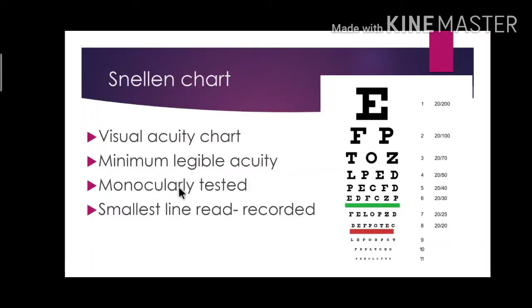Visual acuity is tested monocularly — that is, by covering one eye — and the patient is asked to read the letters from top to bottom. Whichever small line they are reading, that line is recorded as the eye's visual acuity. So if the patient is reading the 6/9 line, 6/9 is recorded. If they are able to read only till the 6/24 line, then 6/24 is recorded as the visual acuity.